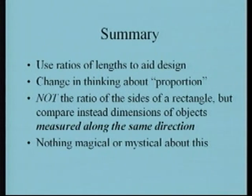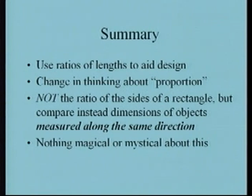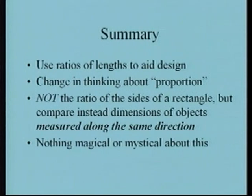A summary before moving on to something totally new. I want to use the ratio of lengths in a design and introduce a change of thinking about proportion. Proportion has been identified as the ratio of the sides of a rectangle — that's not what I mean. Instead, I want to compare the dimensions of objects measured along the same direction — the ratios of objects measured vertically, horizontally, or along all three x, y, and z directions. We can apply the universal scaling to all three directions. There is nothing magical or mystical about this — there is a cloud of mysticism associated with the golden section, and as a scientist and mathematician, I don't subscribe to any of that.